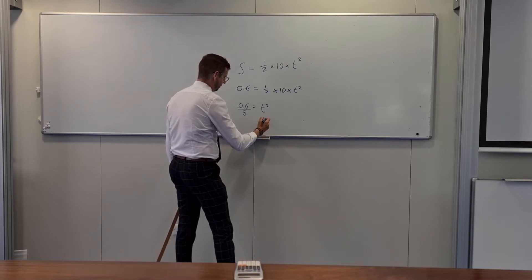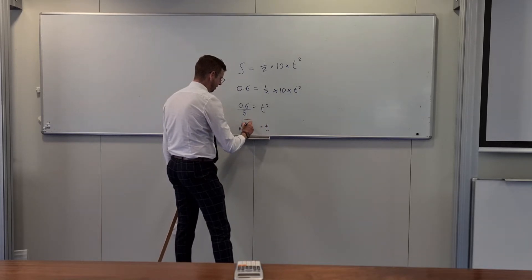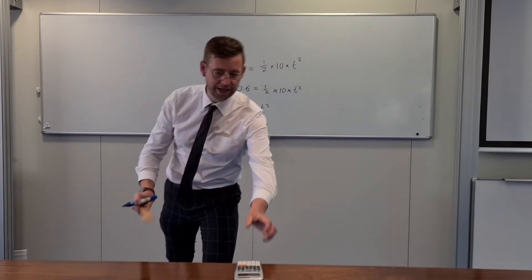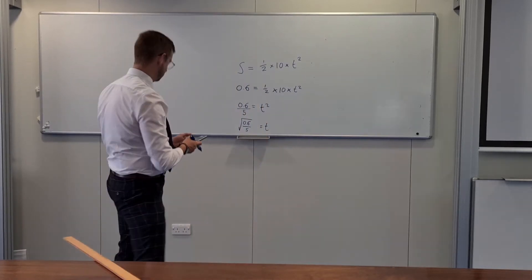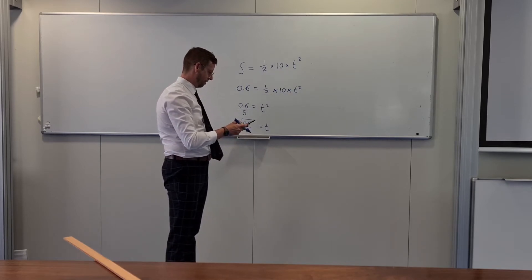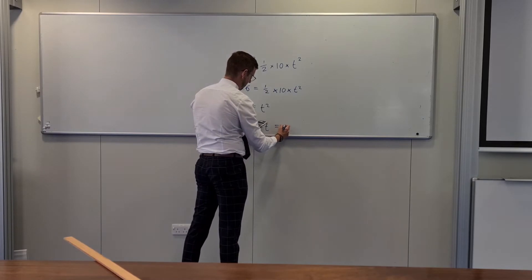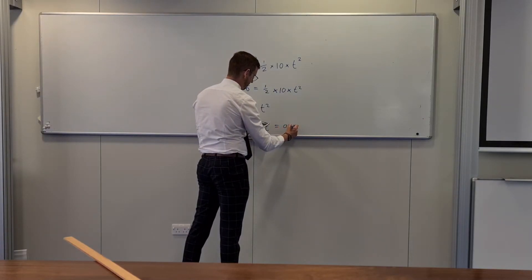Finally, if I square root both sides, I would find out what my reaction time is going to be. 0.6 divided by 5, square root it. And I've got here a calculator. I'm not going to do this in my head. 0.6 divided by 5, square root that. And it works out that I caught it in 0.34 seconds.